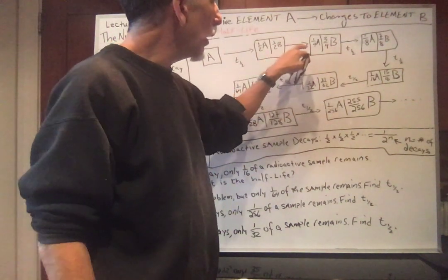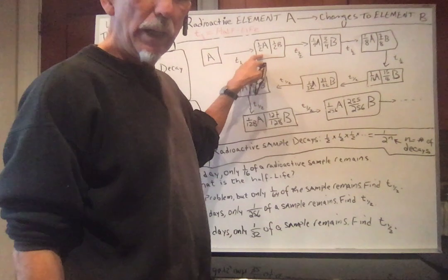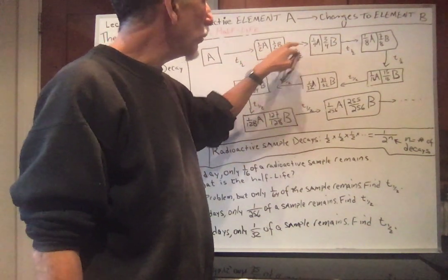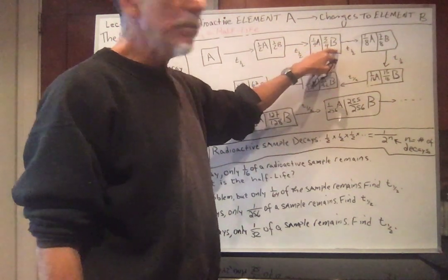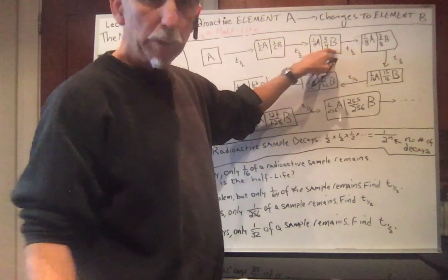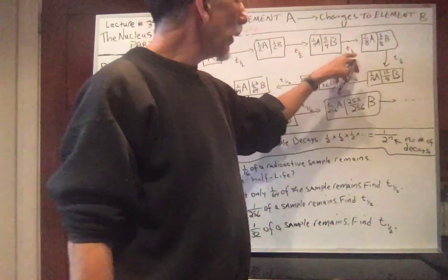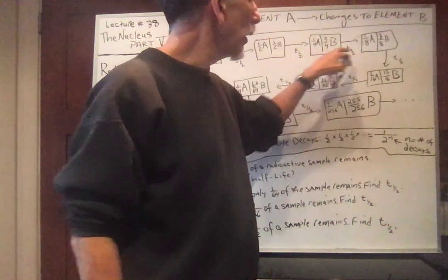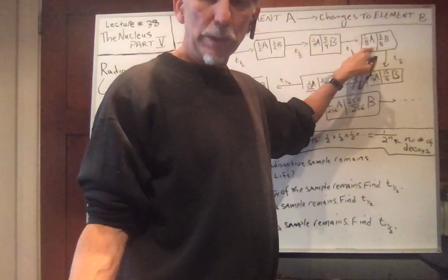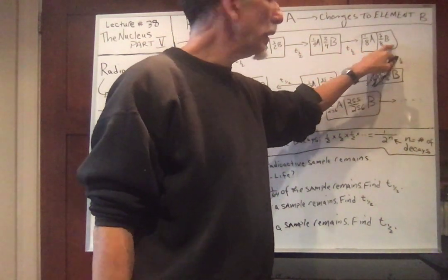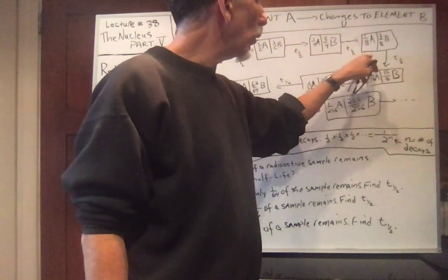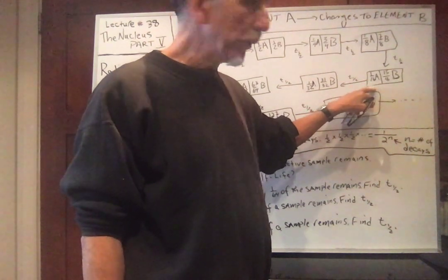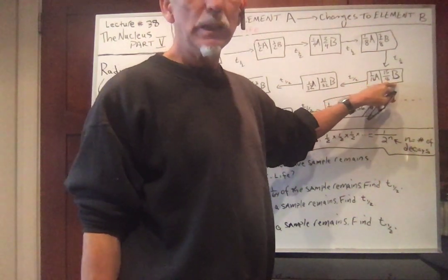If we undergo another half-life, A decays in half again — a half of a half is one-fourth. So now one-fourth of the sample is A and three-fourths has been converted to element B. After another half-life, the one-fourth A decays in half: a half of a fourth is one-eighth of the sample is now A, and seven-eighths is B. Take half of an eighth, you get one-sixteenth — so one-sixteenth of the sample is A and fifteen-sixteenths is B.